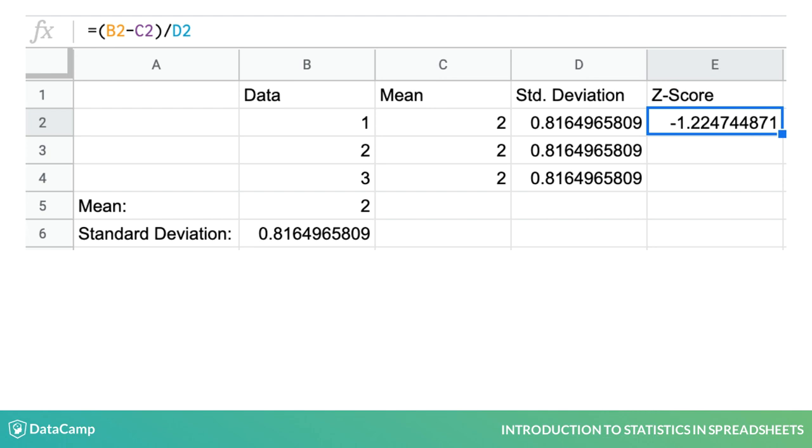But you probably don't want to calculate this manually as we're doing here. Just as with standard deviation, variance, mean, median, and other statistics you've seen so far, there's a spreadsheet formula that makes it easy to calculate z-scores.